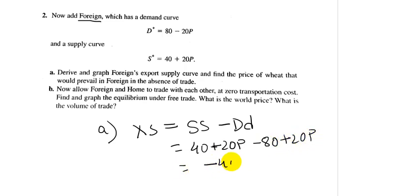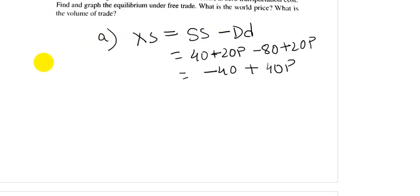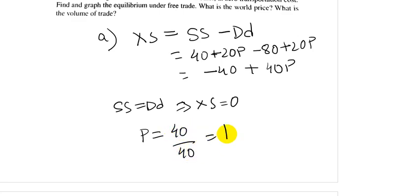Thus, upon solution, this comes to minus 40 plus 40P. In absence of trade, excess supply will be equal to zero. This can be found as supply would equate demand. Hence, excess supply equals zero, and thus price will be 40 by 40, which is equal to 1.